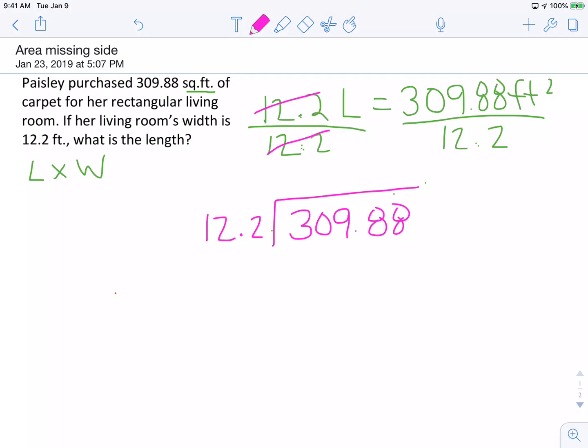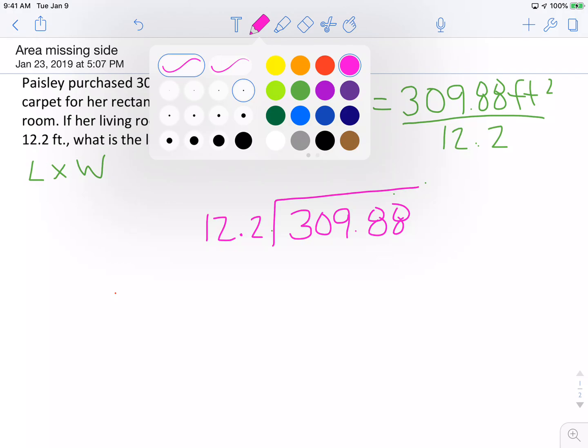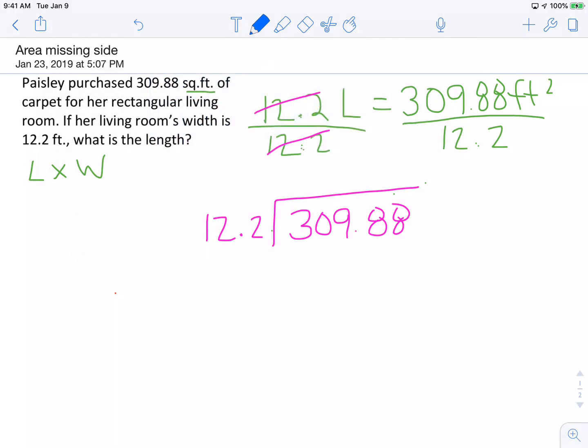Anytime you divide by a decimal, you cannot have the decimal in the divisor. So I'm going to have to move the decimal out, and in order to do that, I just move it to the right to the end of the number. For this problem, I'm going to move it over one place to the right. Since I moved the decimal one place to the right in the divisor, I now have to go to the dividend and also move the decimal one place to the right.